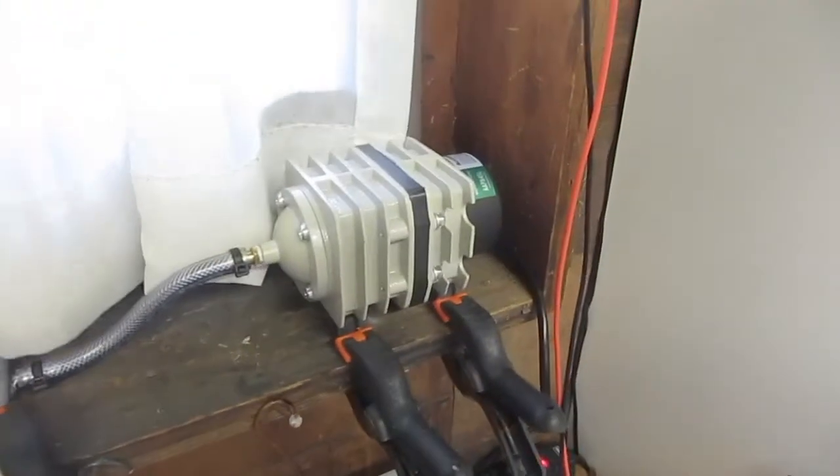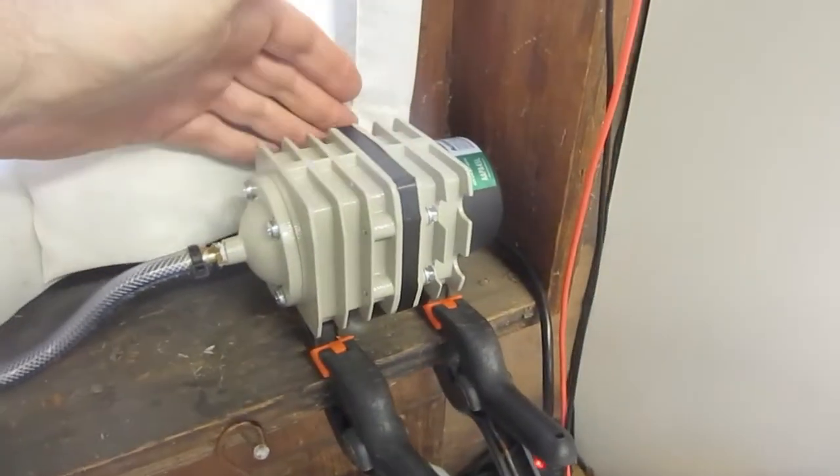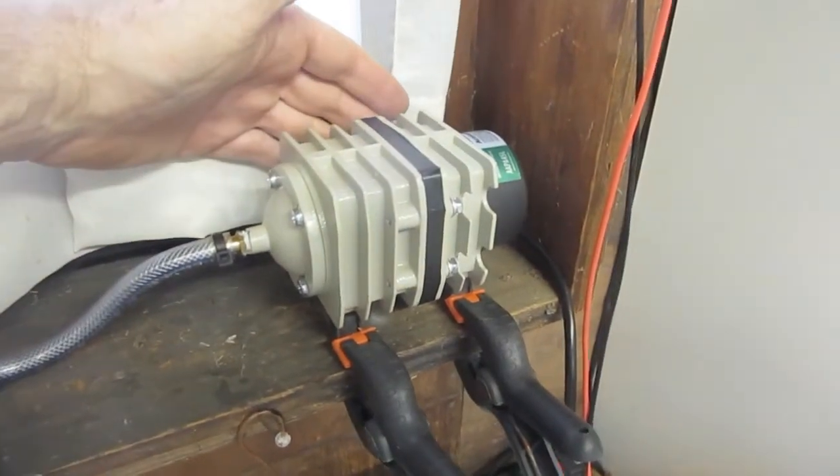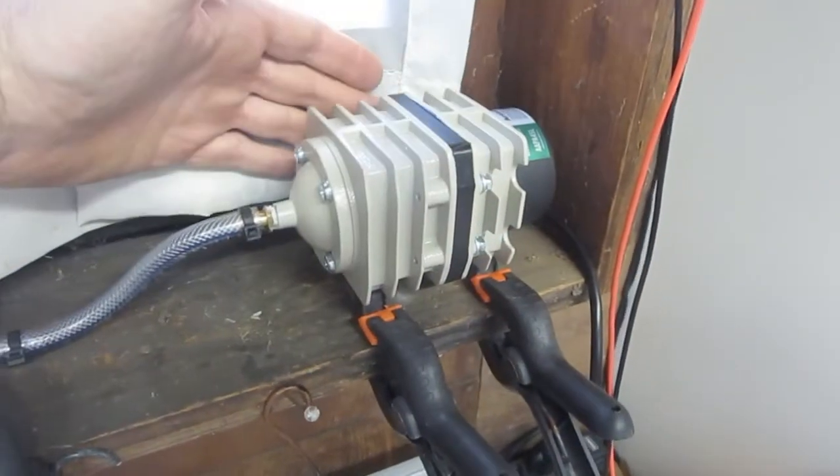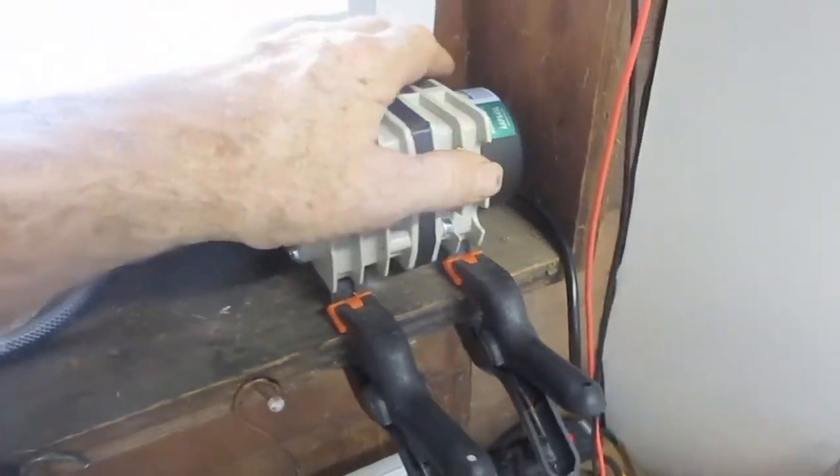Now this air pump has cooling fins on it, on the castings. That's kind of a clue that this unit has to be in an area that has free air circulation around it. You want to keep it cool because it can get warm.